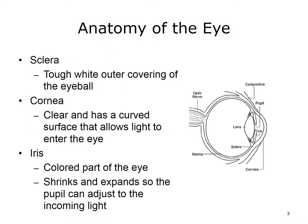Here is a brief overview of the anatomy of the eye. The sclera is the tough white outer covering of the eyeball. The cornea is clear and has a curved surface that allows light to enter the eye. The iris is the colored part of the eye that shrinks and expands so the pupil can adjust to the incoming light.